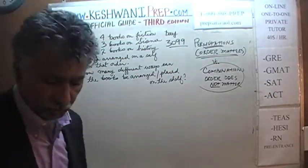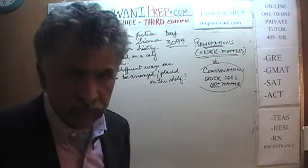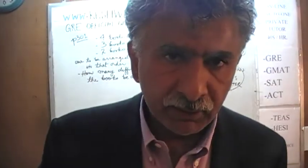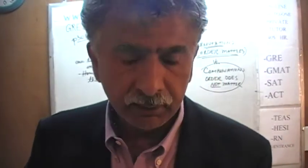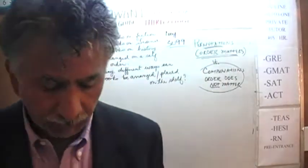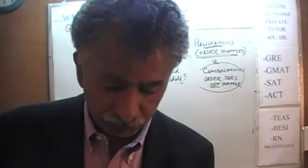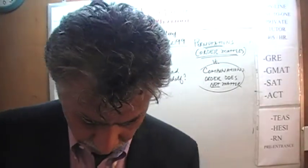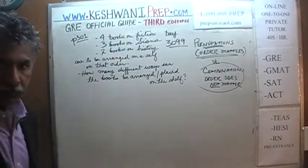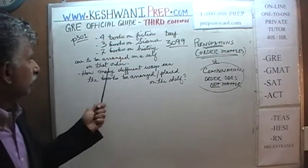We are going to do a couple of problems today. These problems that we are about to do are not in the book, so don't look for them. The topic of permutations versus combinations is something that you will find on page number 301. So here we go.